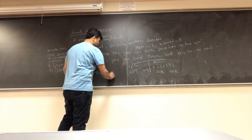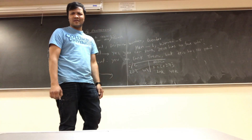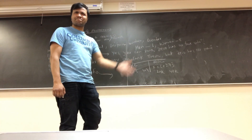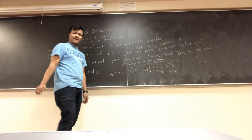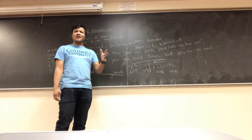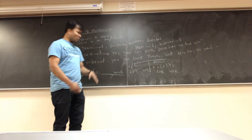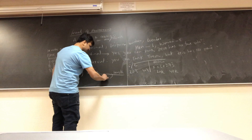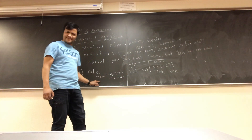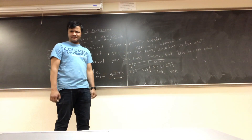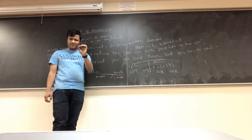Finally, ratio: when you can rank and zero has a true value. For example, length — if something is 1 meter and something else is 2 meters, then we can say 2 meters is twice as big as 1 meter. So zero has an absolute, meaningful value. That's ratio.